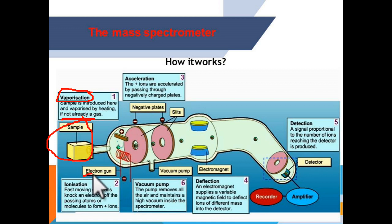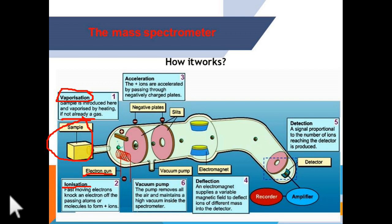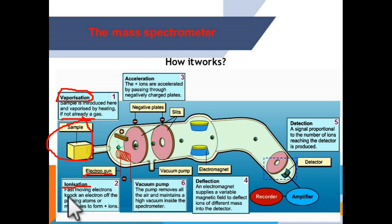Then comes the electron gun, which does the bombardment — collisions with the neutral atom. The collision forces the electron to be removed from the atom. This process is called ionization. Ionization is the process of removing one electron from a neutral atom. Fast-moving electrons knock out the electron of the passing atom and make it positively charged.